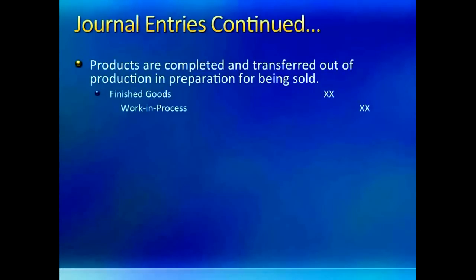I hope you are getting comfortable with journal entries now. Next, we need an entry to transfer completed goods out of work in process and into finished goods. Using the rule of debit what comes in and credit what goes out, you credit work in process and debit finished goods. You can also construct this entry by picturing the flow of inventory in the T-account series. So now goods are waiting in the finished goods account to be sold.